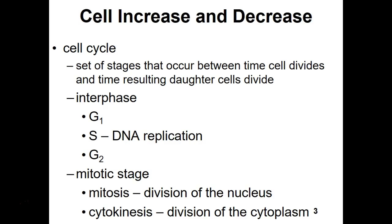There are two proteins — cyclin and CDK — that work together to protect us in the cell cycle. They check the cell and allow it to move into the next phase, called synthesis. During synthesis, DNA replication occurs. In the human cell, we have 46 chromosomes — 23 from mom and 23 from dad, making 23 pairs. Each of the 46 chromosomes must replicate, so we end up with 92 chromosomes inside the cell at the end of synthesis phase.